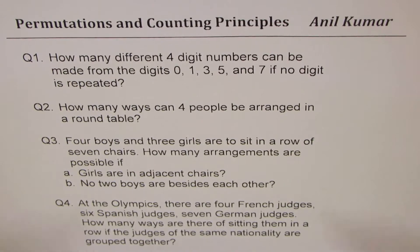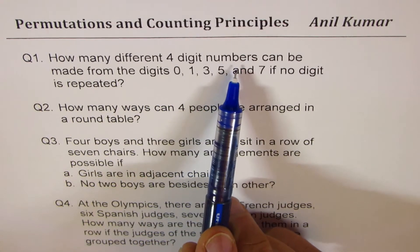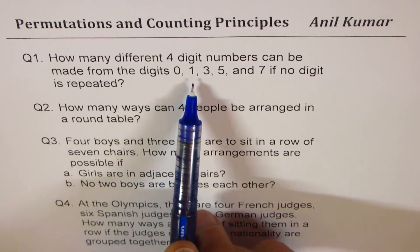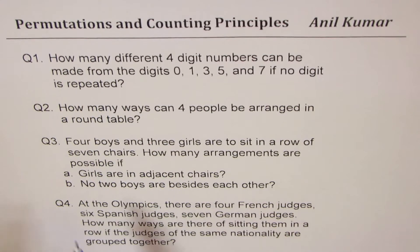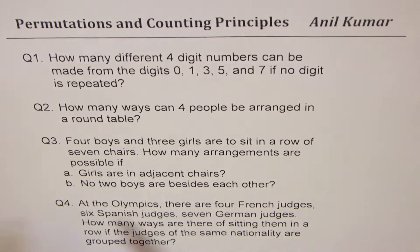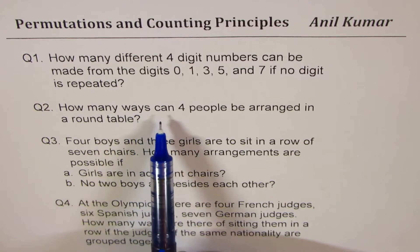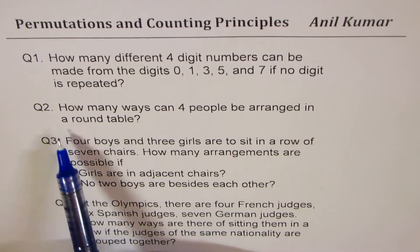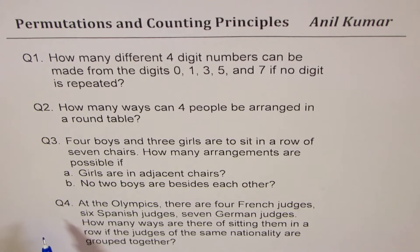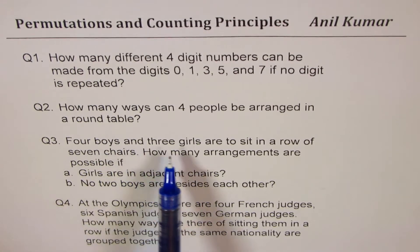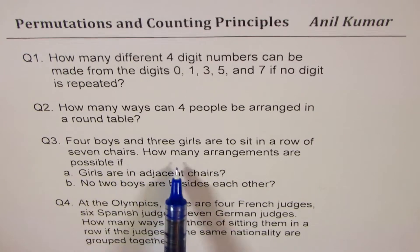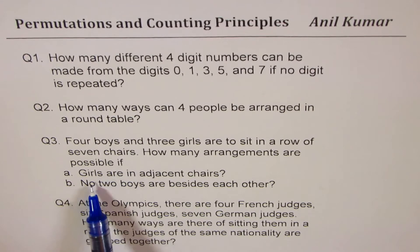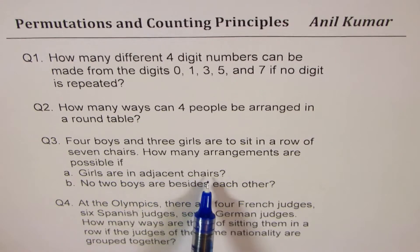Question number one: how many different four-digit numbers can be made from the digits 0, 1, 3, 5, and 7 if no digit is repeated? Question number two: how many ways can four people be arranged at a round table? Question number three: four boys and three girls are to sit in a row of seven chairs. How many arrangements are possible if girls are in adjacent chairs, or if no two boys are beside each other?